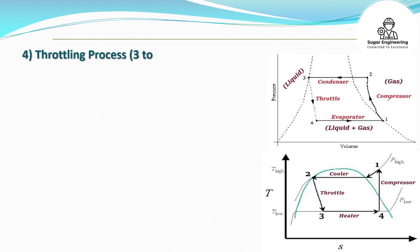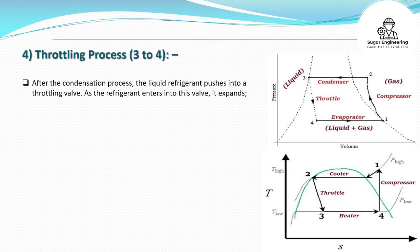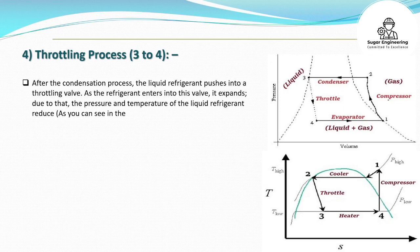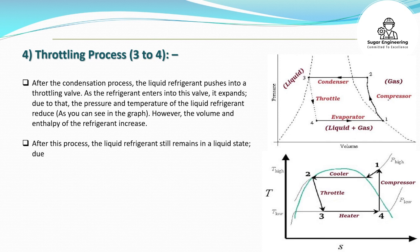4. Throttling Process (3 to 4): After the condensation process, the liquid refrigerant pushes into a throttling valve. As the refrigerant enters into this valve, it expands. Due to that, the pressure and temperature of the liquid refrigerant reduce, as you can see in the graph.